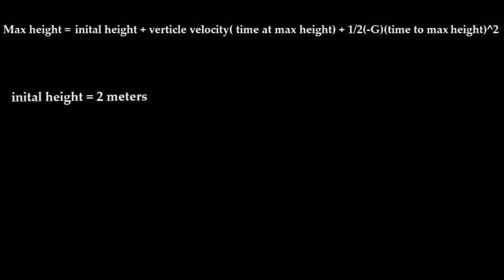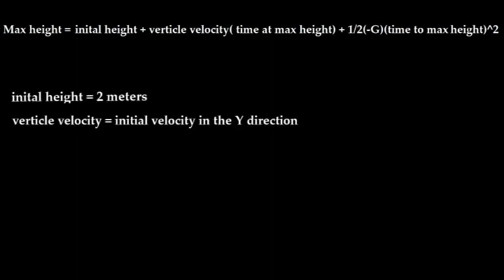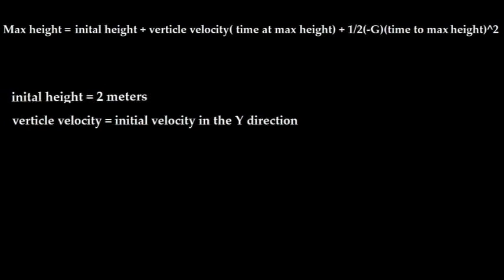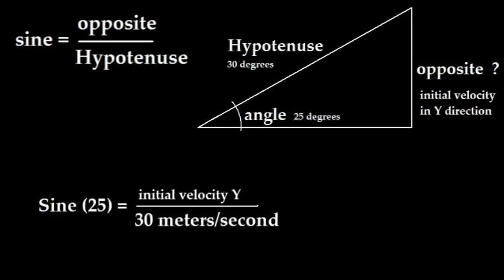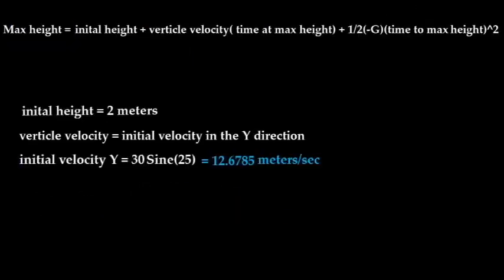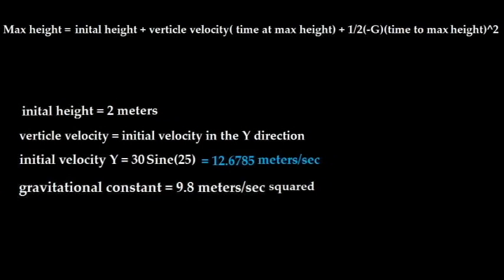Initial height is equal to 2 meters. Vertical velocity is equal to the initial velocity in the Y direction, which we can find with a little trigonometry. Sine is equal to opposite over hypotenuse. Sine of 25 degrees equals the initial velocity in the Y direction over 30 meters per second. So the initial velocity in the Y direction equals 30 multiplied by sine of 25 degrees, which equals 12.6785 meters per second. We also know that the gravitational constant of 9.8 meters per second squared on Earth is negative, because its vector is different than up.